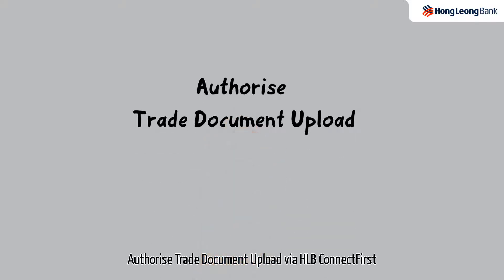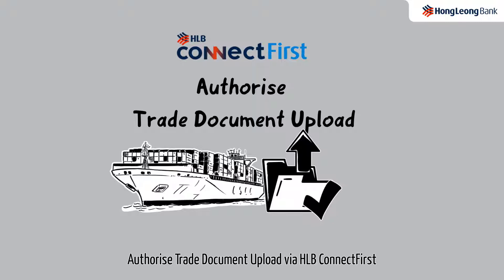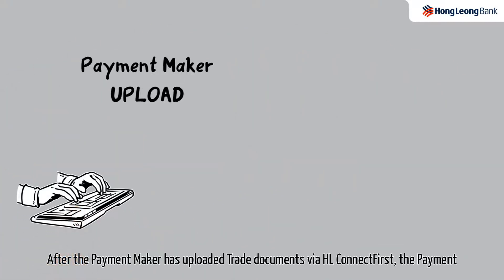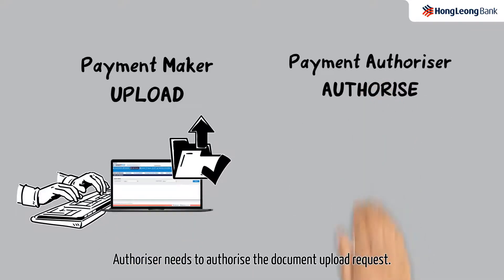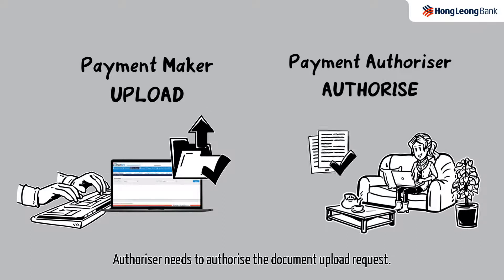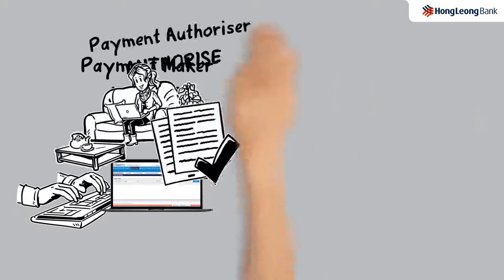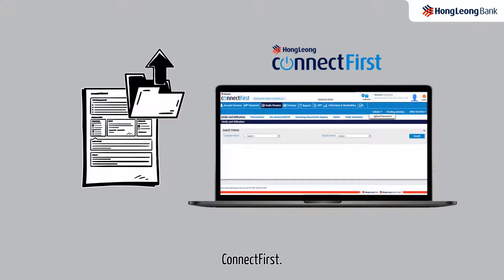Authorize Trade Document Upload via HLB Connect First. After the payment maker has uploaded trade documents via HLB Connect First, the payment authorizer needs to authorize the document upload request. Trade document upload is currently only available in the classic view of HLB Connect First.